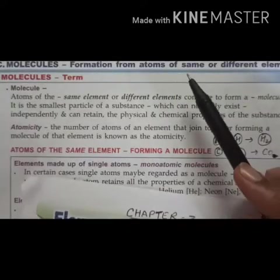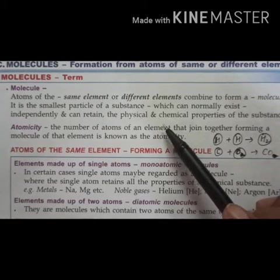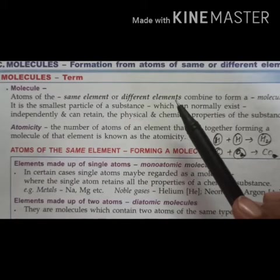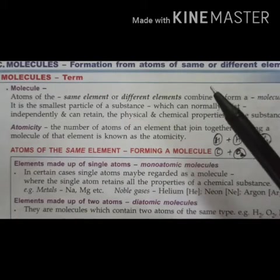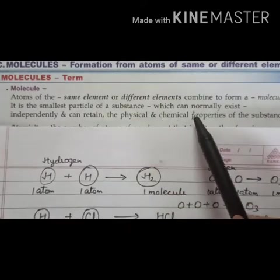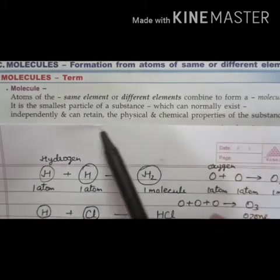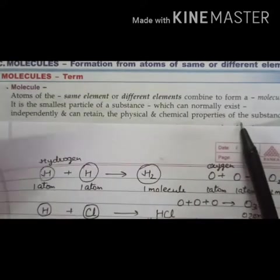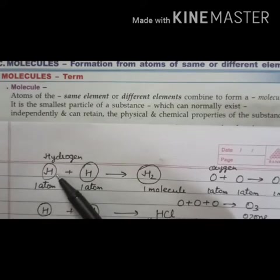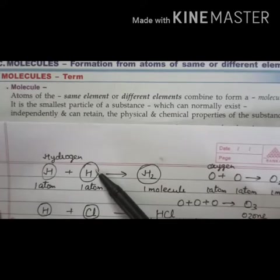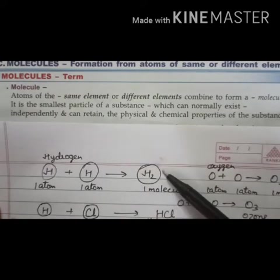In this video, we will discuss about molecules and atomicity. What is a molecule? A molecule is atoms of the same element or different elements combined together. It is the smallest particle of a substance which can normally exist independently and can retain the physical and chemical properties of that substance. For example, one atom of hydrogen combined with another atom of hydrogen gives one molecule of hydrogen.